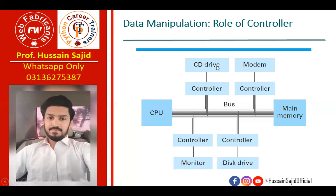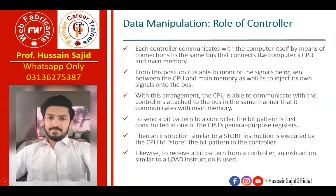Looking at the diagram, your CPU and main memory are connected with buses. Inside there are three types: a data bus, an address bus, and a control bus. All cables — for the CD drive, modem, monitor, disk drive — connect their controllers to your computer. Each controller communicates with the computer itself by means of connections to the same bus that connects the computer's CPU and main memory.